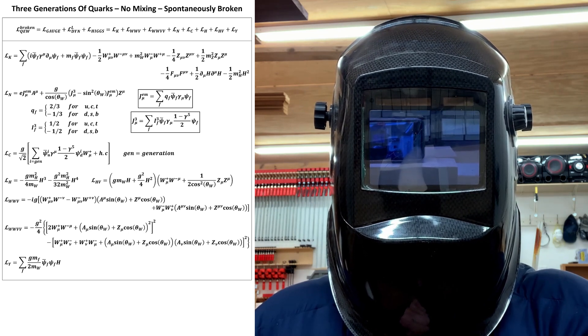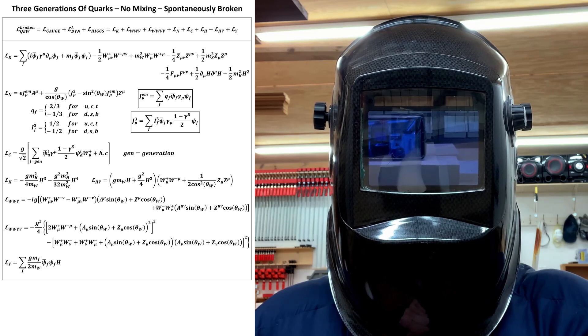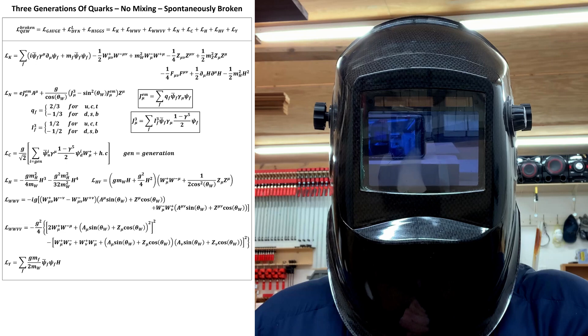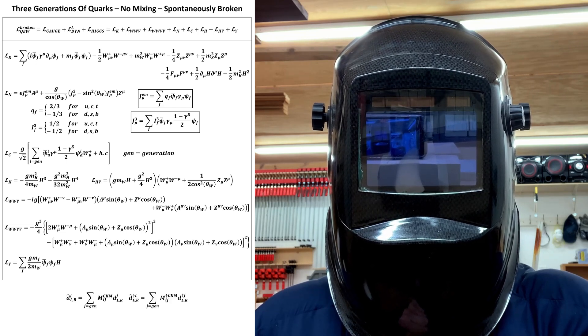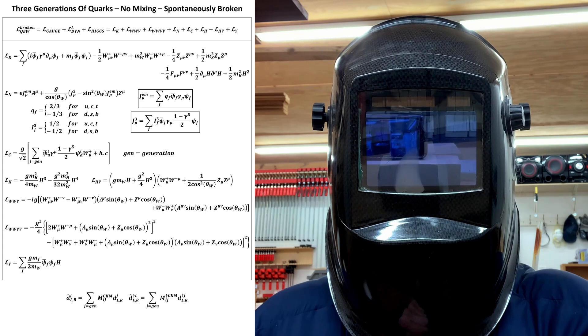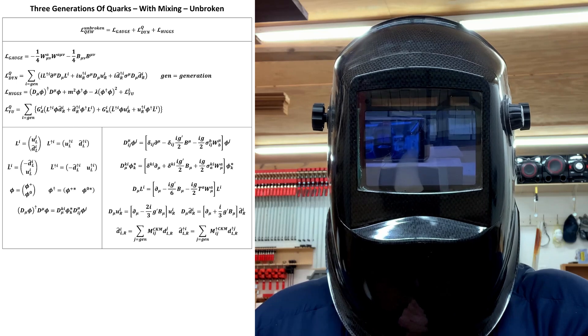By convention, the difference is encoded by a change of basis on purely the down type quarks with the famous CKM matrix. Specifically, we have this. Performing this substitution on our existing three generation quark QEW theory gives us this complete unbroken Lagrangian for the electroweak interactions of all quarks, and this spontaneously broken one.